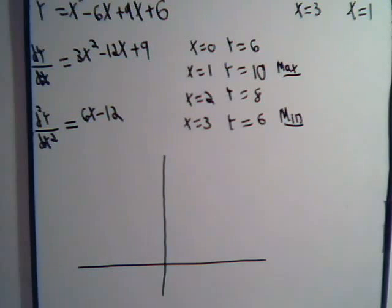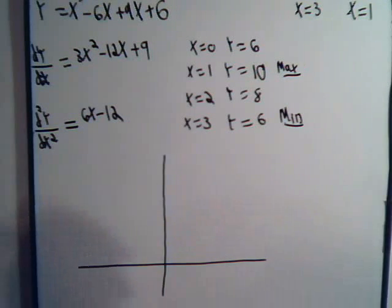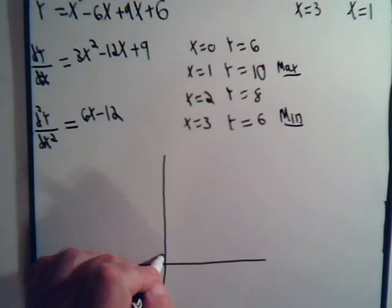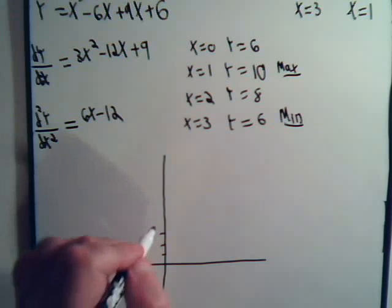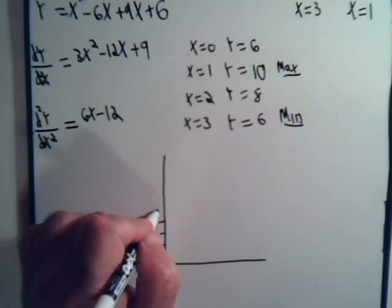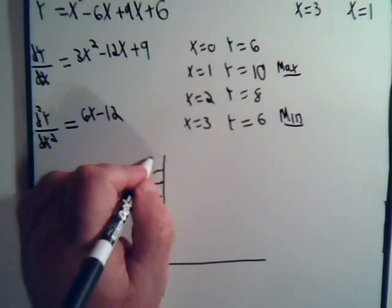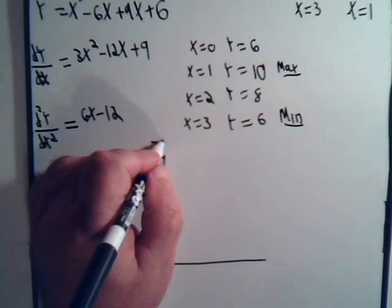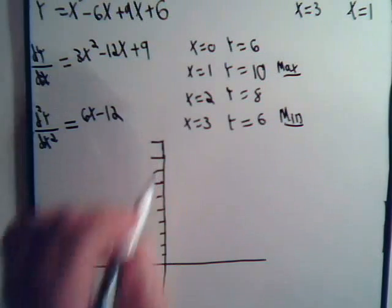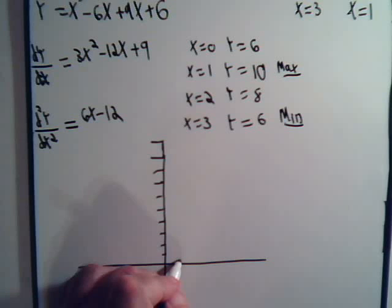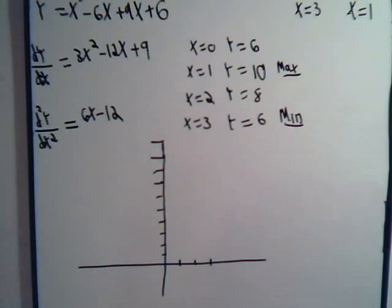So, let's see, we have the maximum value for y is 10. So, we have 1, 2, 3, 4, 5, 6, 7, 8, 9, 10. This is going to be a very rough graph. x is 1, 2, and 3.